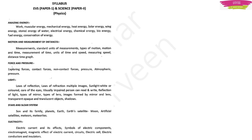Now talking about the syllabus for EVS and Science. EVS means Environmental Science. In Paper 1, in place of Science, they are giving EVS. Science includes Physics, Chemistry and Biology — those three together are put under EVS for Paper 1. In Paper 2, specifically they give a separate syllabus for Physics, Chemistry and Biology under Science. The first chapter is Amazing Energy — this includes work, energy, all types of energy including the concept of conservation of energy. Then we have Motion and Measurement of Distances, Force and Pressure, Light, Stars and Solar System, and Electricity. The difficulty level will be different for Paper 1 and Paper 2.